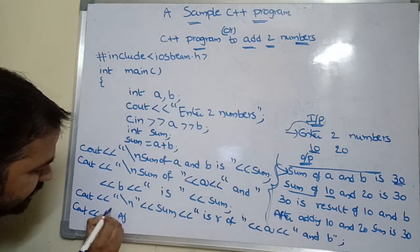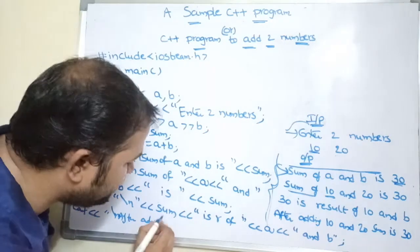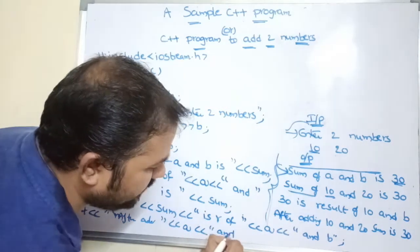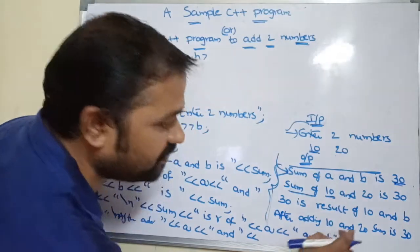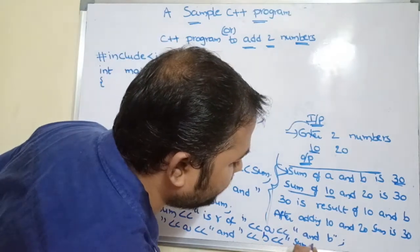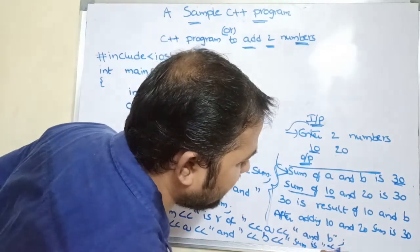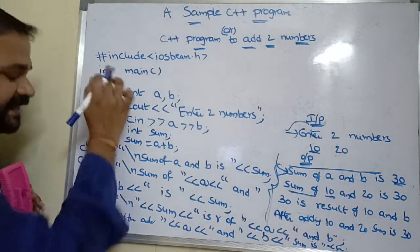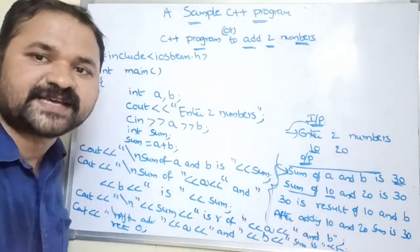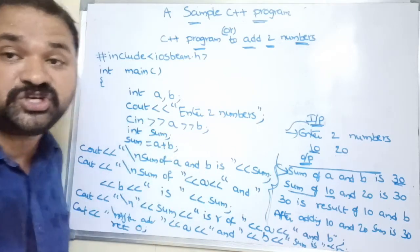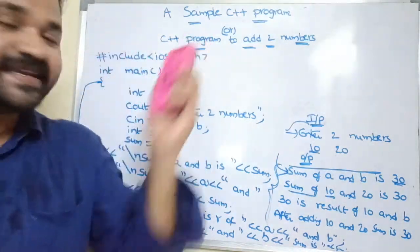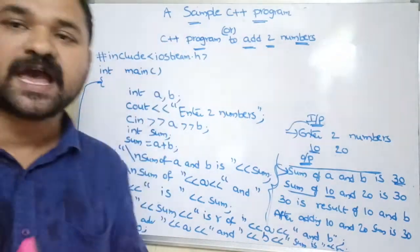For the fourth line: 'after adding 10 and 20 sum is 30', we write `cout << "\nafter adding " << a << " and " << b << " sum is " << sum`. Next, `return 0` is the last statement of main. We use 0 because if the program is successfully compiled and executed, the main function returns zero. Then we close the main function. In this way we write a C++ program to add two numbers.